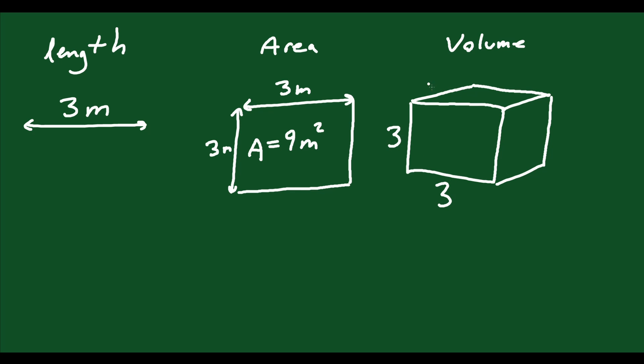So each of these sides we could say is 3 meters still. It's all in meters. The volume would be 3 times 3 times 3 which is 27 meters cubed.